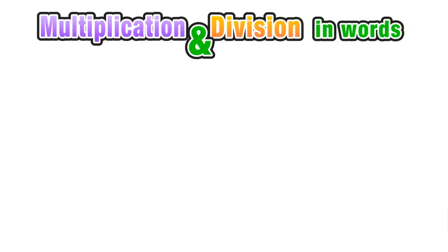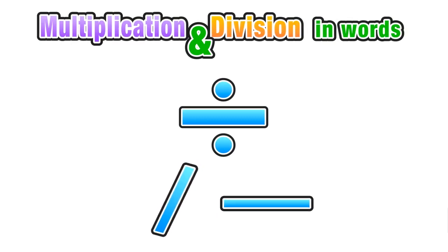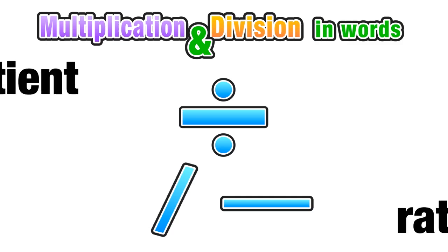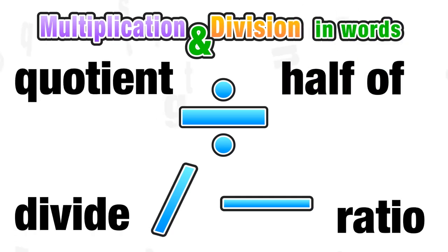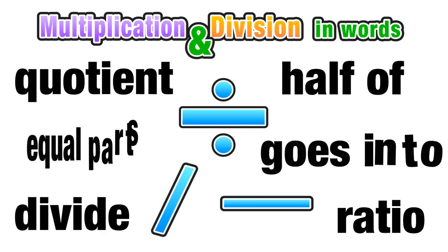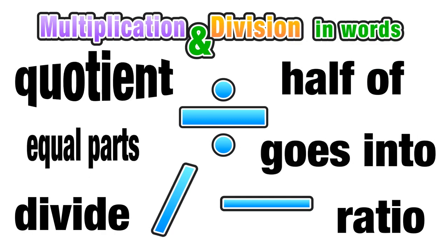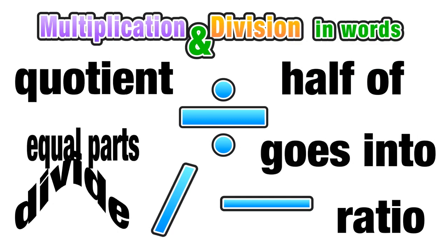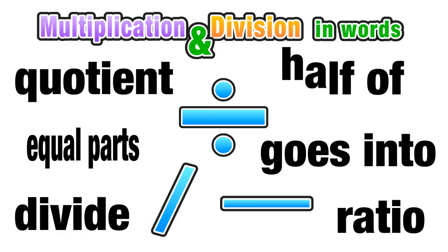So now that we've covered multiplication, let's look at its inverse, division. We can express division using different symbols, including a slash or a fraction sign. We can use the words quotient or ratio, half of or divide, equal parts, or goes into. All of these words and phrases can represent division.